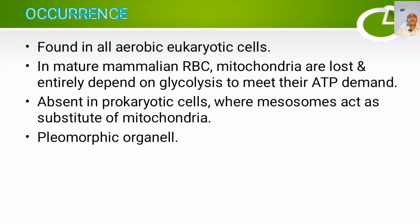Now, regarding the occurrence of mitochondria — they are found in all aerobic eukaryotic cells, but they are absent in prokaryotic cells, where their function is carried out by mesosomes, which act as a substitute. In matured mammalian RBCs, mitochondria are absent, but in young RBCs they are present. In the matured ones, mitochondria are lost, and thus matured mammalian RBCs are totally dependent on glycolysis to meet their ATP demand.